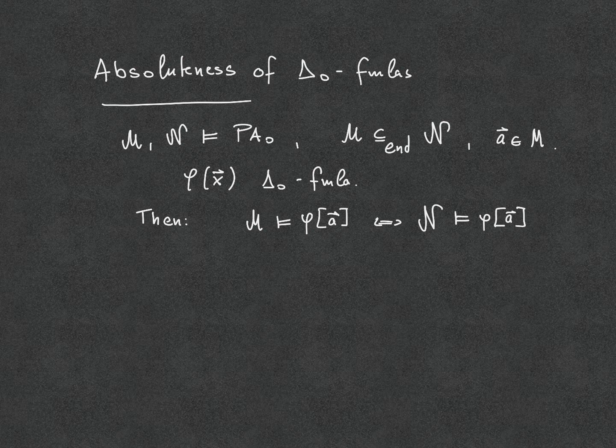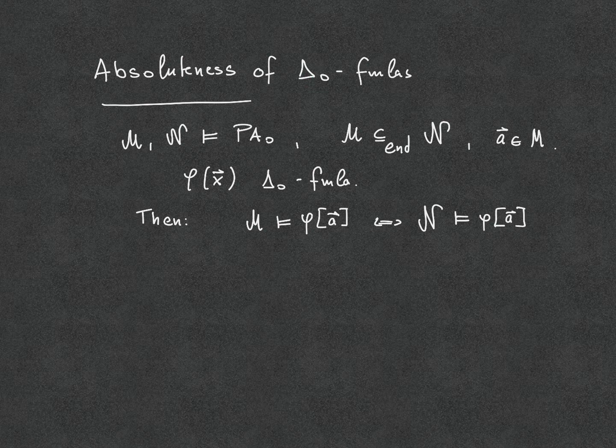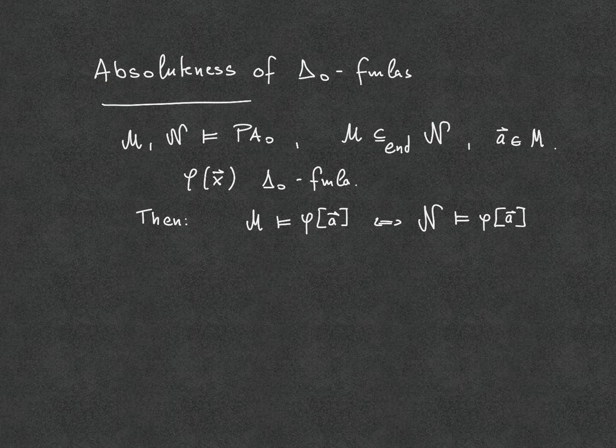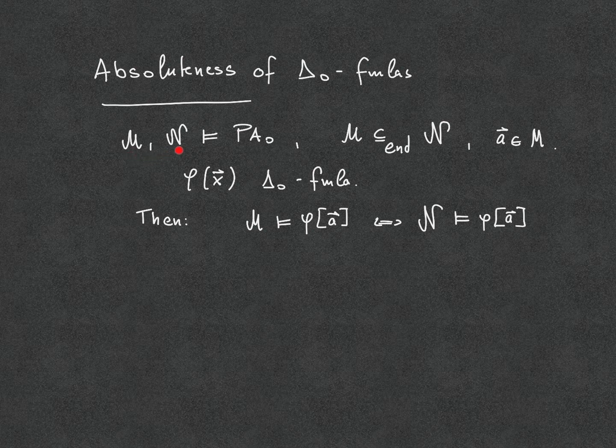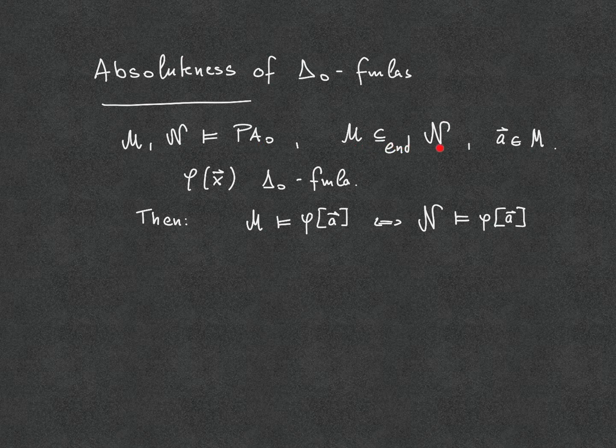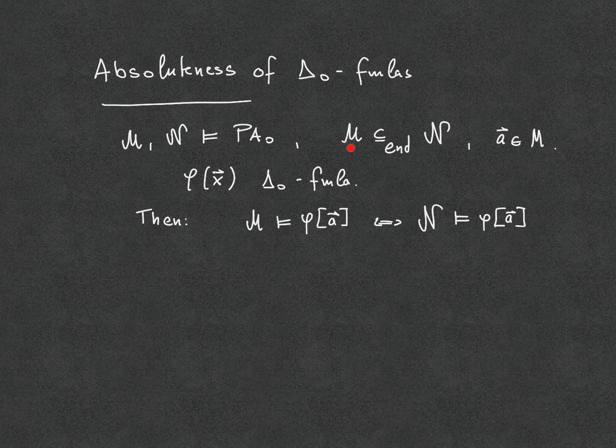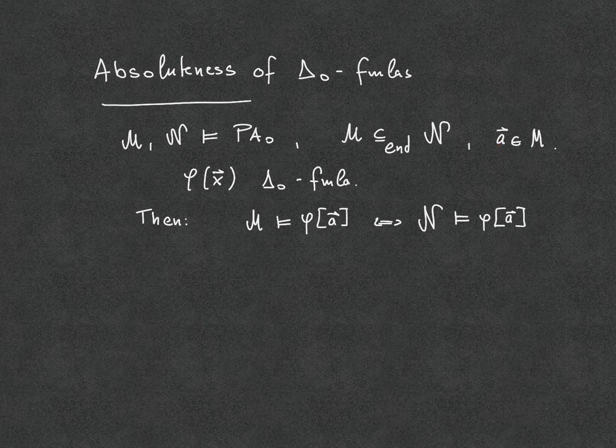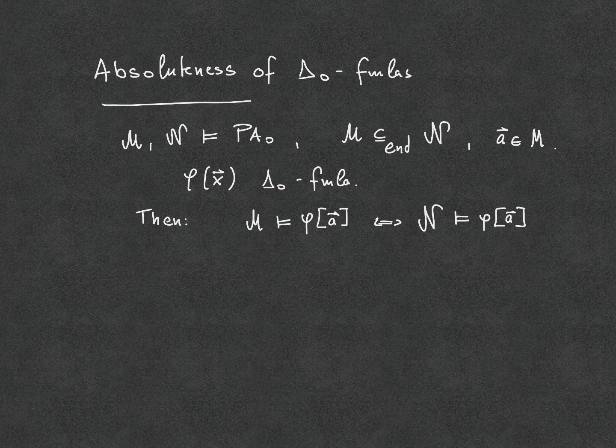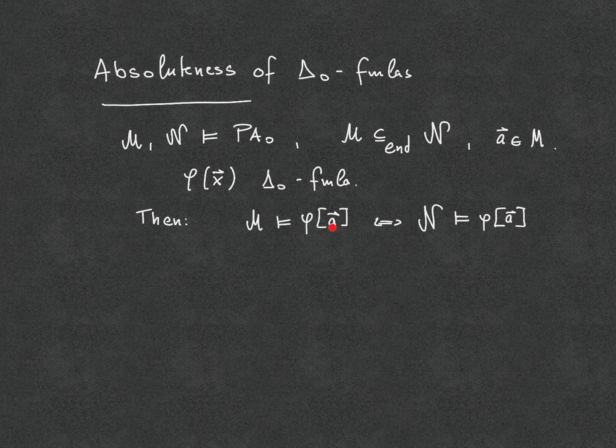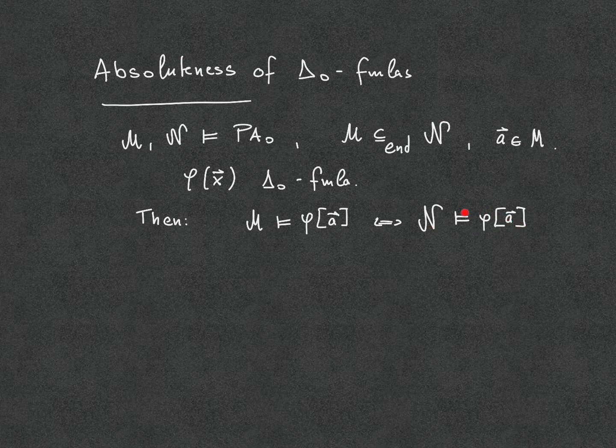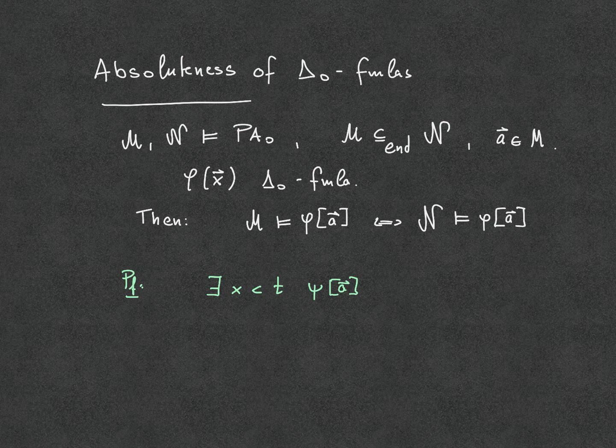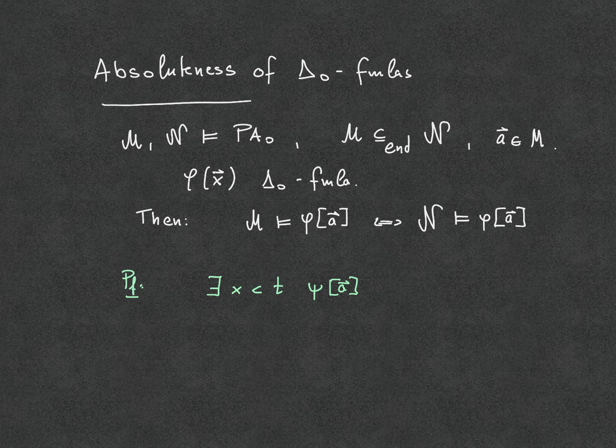But for now, let's focus on the delta-0 formulas, on the lower end of the arithmetical hierarchy. Delta-0 formulas have a very nice property in the sense they're absolute between end extensions. So what does this mean exactly? Let's assume we have two models of PA0, and n is an end extension of m. Equivalently, m is an initial segment of n. And let's assume we have a tuple A in the smaller structure, and we have a delta-0 formula. So you prove this by induction over the formula structure, the height of the formula.